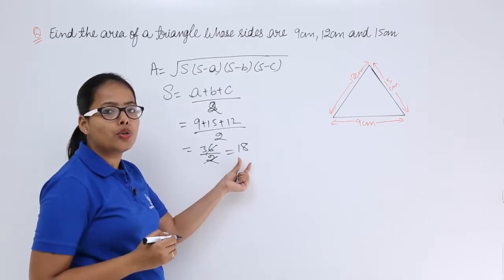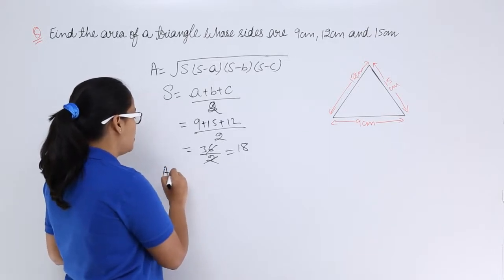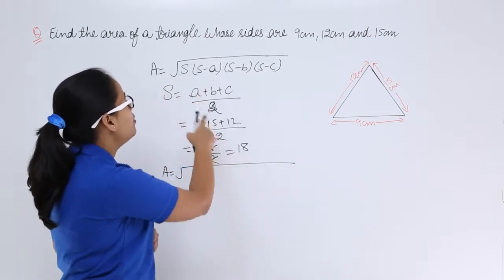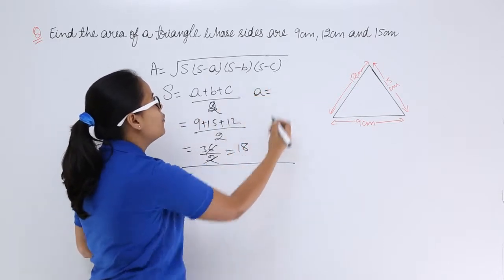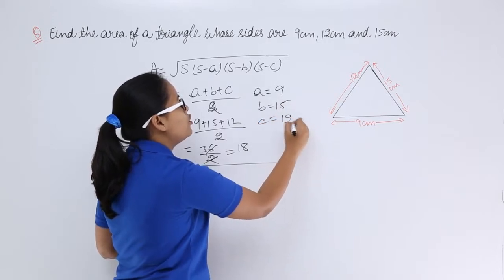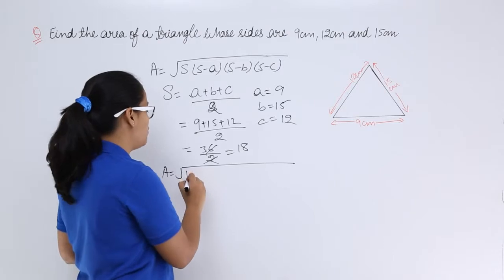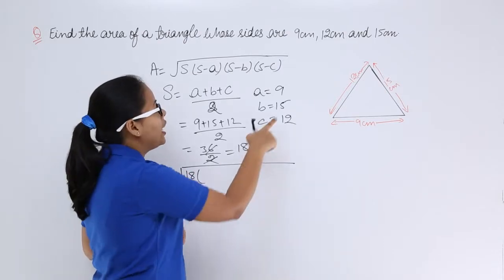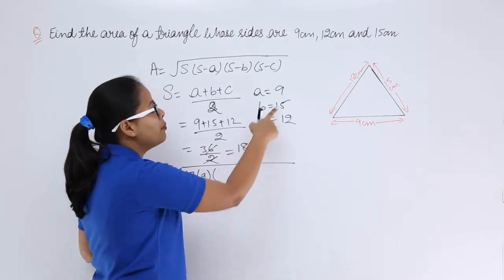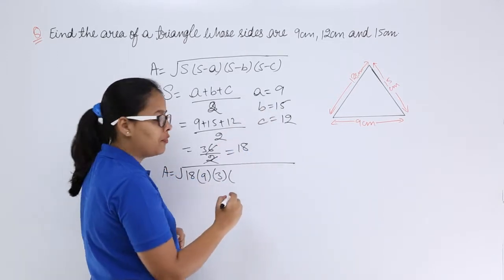Now, you are going to use this value in the formula. So now, let's find the value for area: 18, 18 minus a - let's suppose the value for a is 9, value for b is 15, value for c is 12. Now you know the value for semi-perimeter which is 18. 18 minus 9 will give you 9, 18 minus 15 will give you 3, and 18 minus 12 will give you 6.